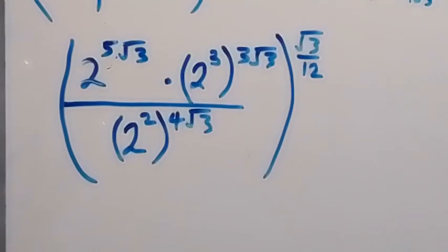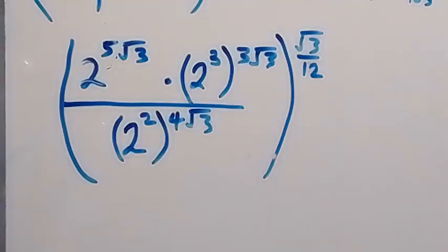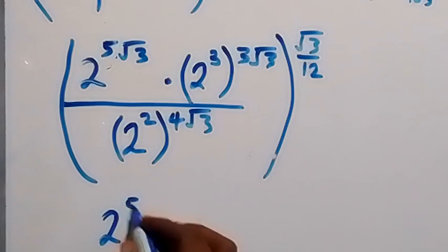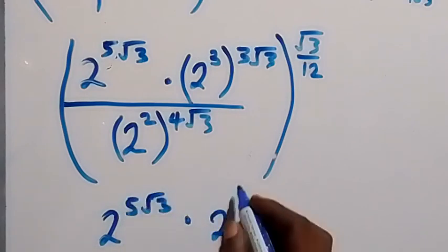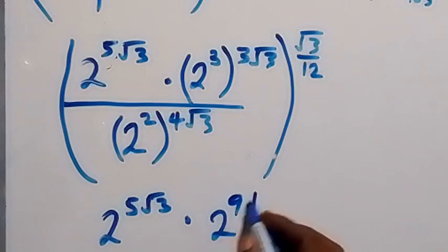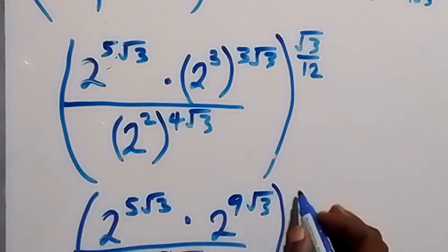From the law of indices, we multiply the powers. This gives us 2 raised to power 5 root 3, times 2 raised to power 9 root 3, divided by 2 raised to power 8 root 3, then all raised to power root 3 over 12.